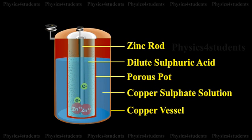Positive zinc ions pass through the pores of the porous pot and react with copper sulphate solution producing positive copper ions.